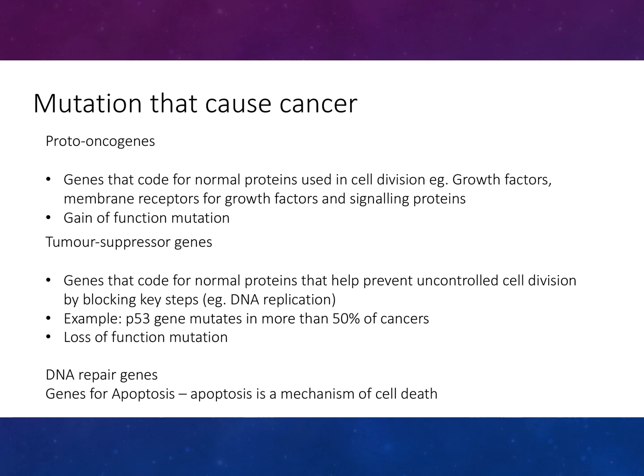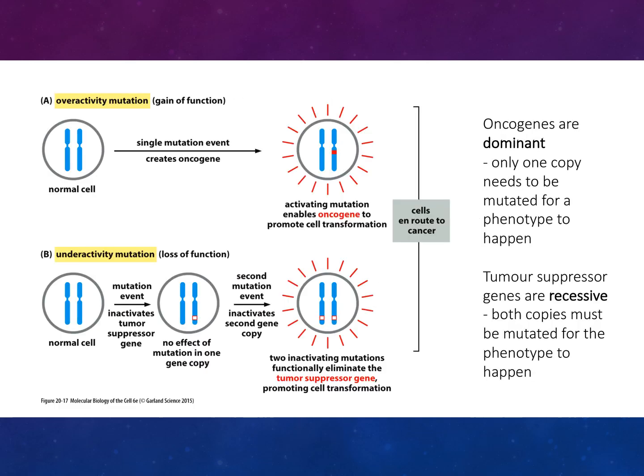DNA repair genes are key for apoptosis, a mechanism of cell death. A normal cell signal mutation event can convert proto-oncogenes to oncogenes; an activation mutation enables oncogenes to promote cell transformation. Oncogenes are dominant — only one copy needs to be mutated for a phenotype to occur. In contrast, tumour suppressor genes are recessive — two inactivating mutations are needed to functionally eliminate them and promote cell transformation.